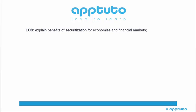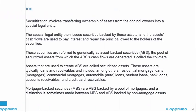This LOS explains the benefits of securitization for economies and financial markets. Securitization involves transferring ownership of assets from the original owners into a special legal entity. The special legal entity then issues securities backed by these assets, and the assets' cash flows are used to pay interest and repay the principal owed to the holders of the securities. These securities are referred to generically as asset-backed securities, or ABS. The pool of securitized assets from which the ABS cash flows are generated is called the collateral.